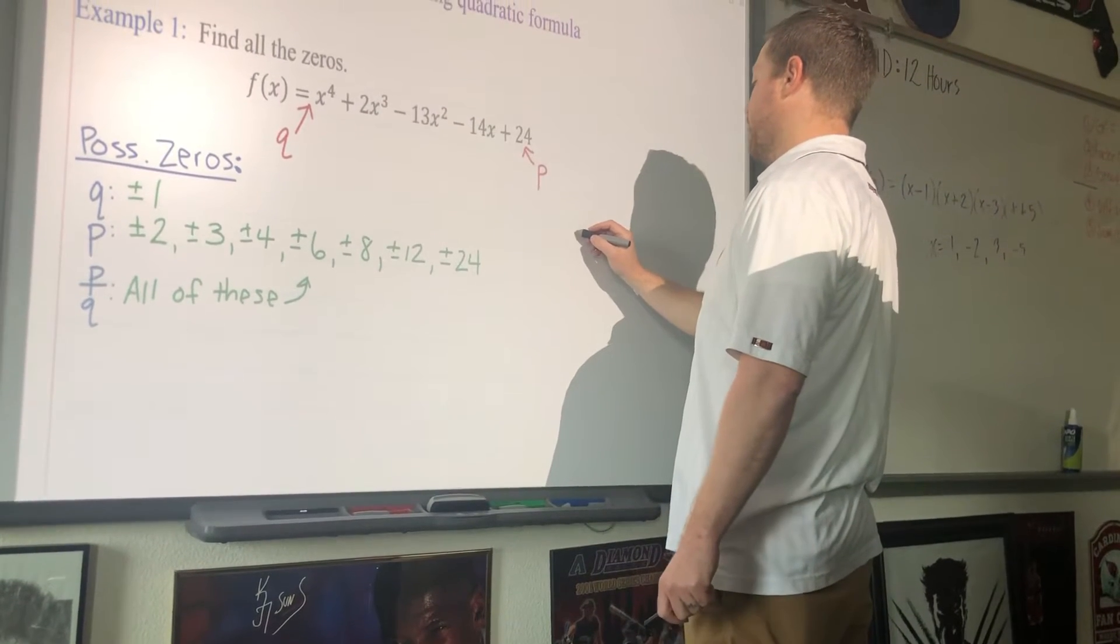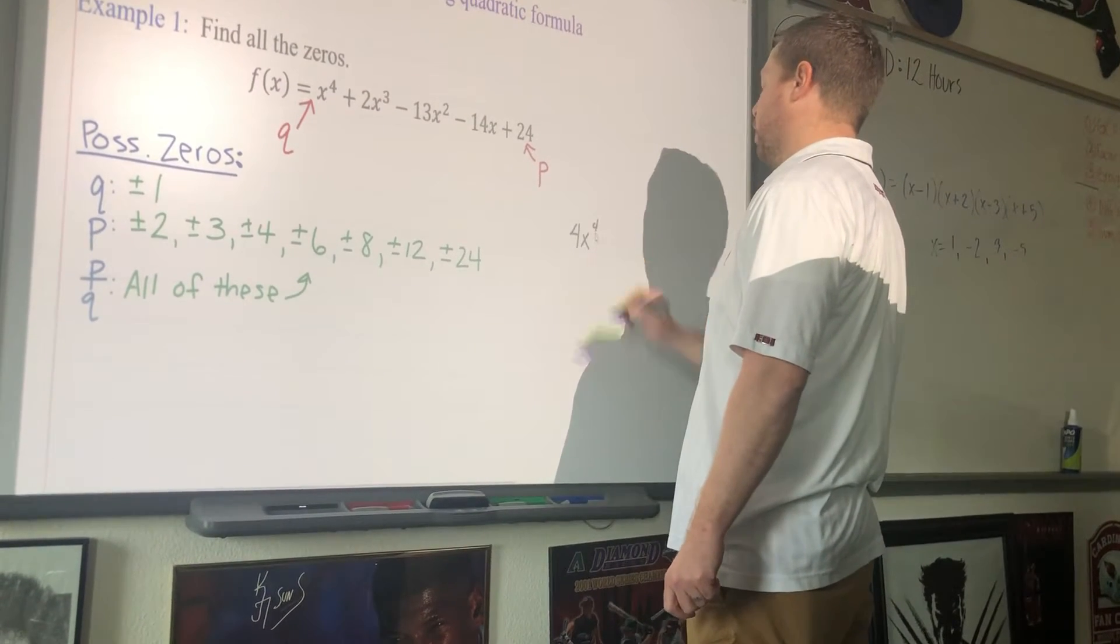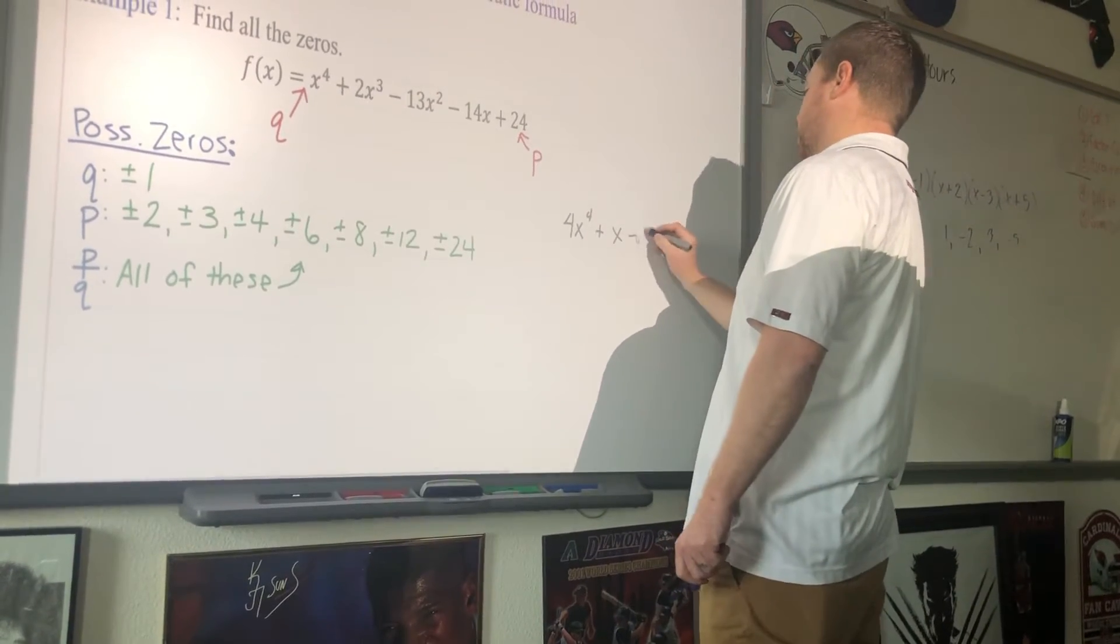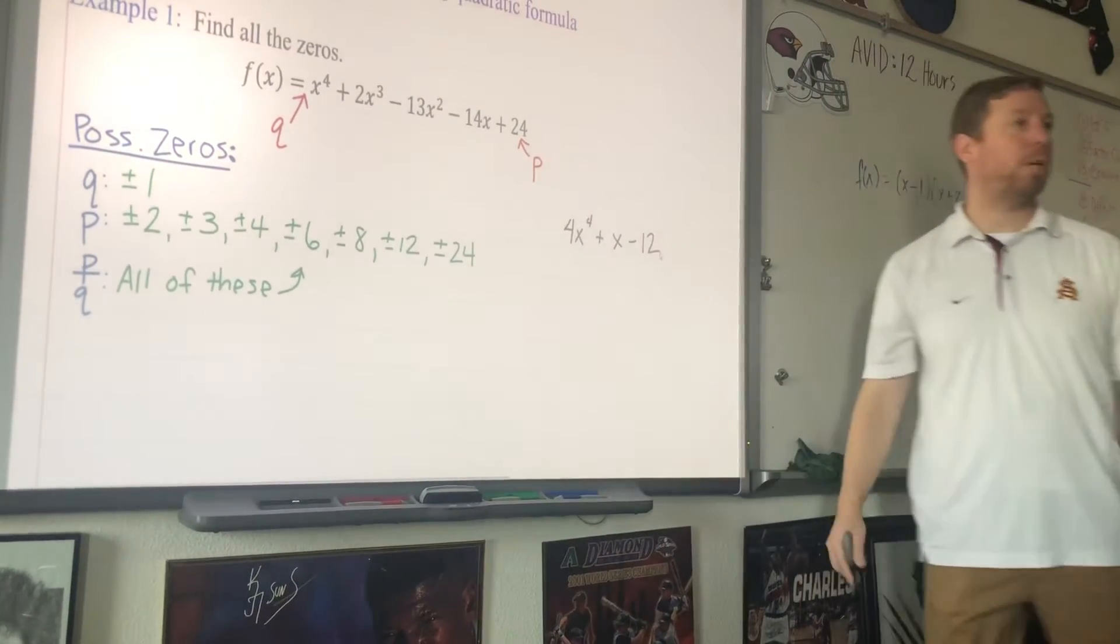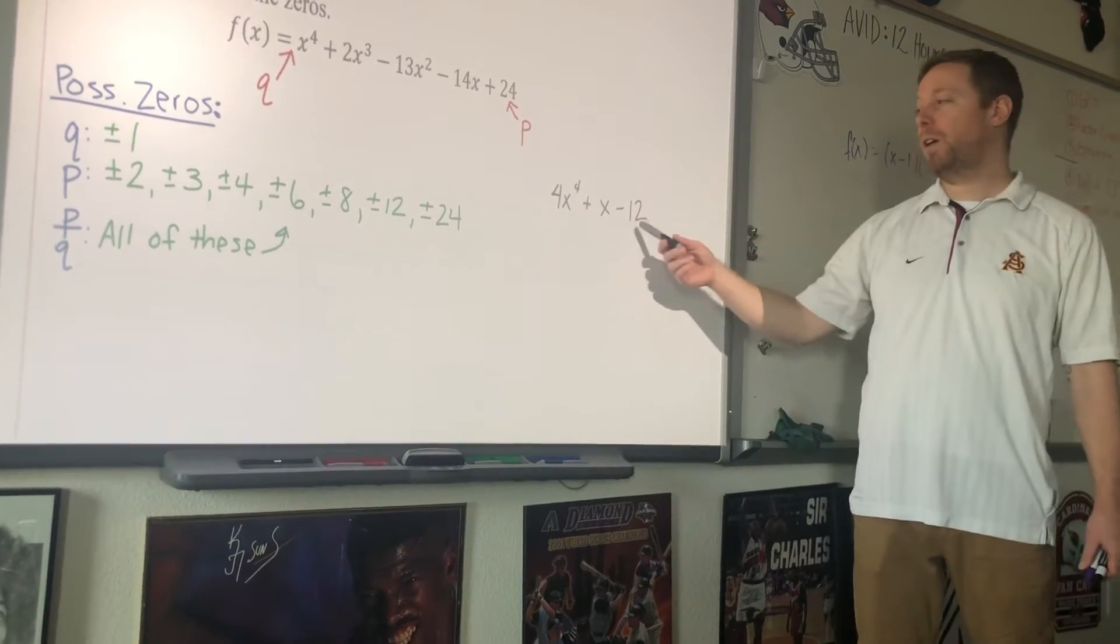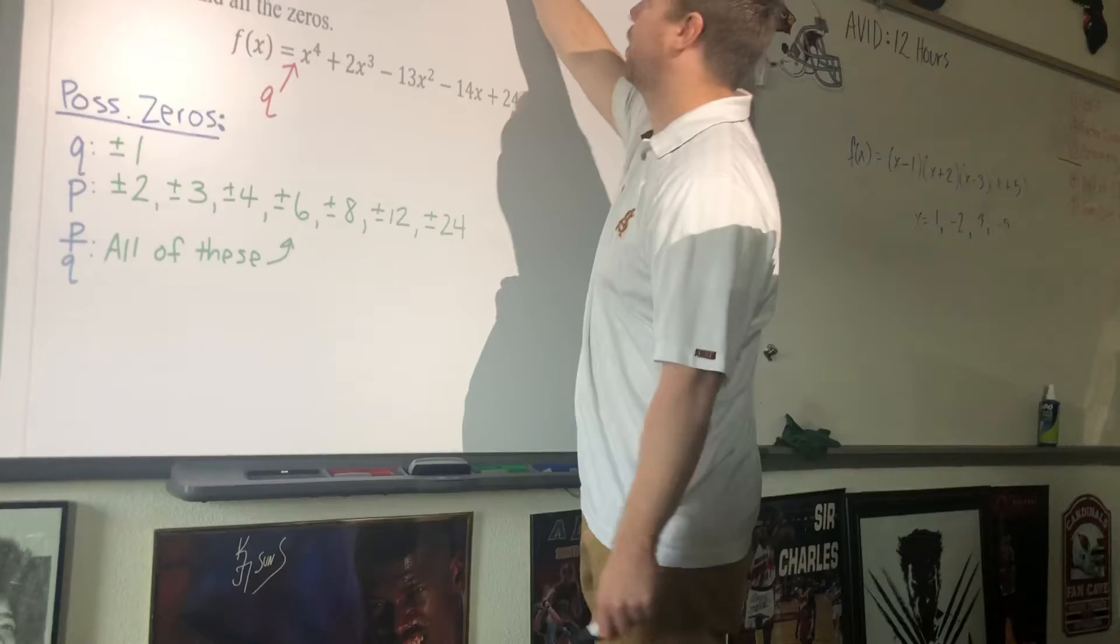Let's say I got 4X to the 4th plus X minus 12. So I skipped some terms in there. That's fine. P is 4. Q is negative 12. So let's do that. Sorry, Q is 4. Q is 4. So factors of 4. We'll do this one a little bit quicker.